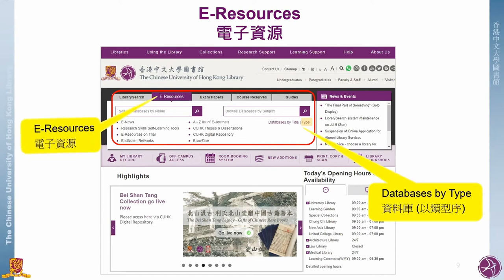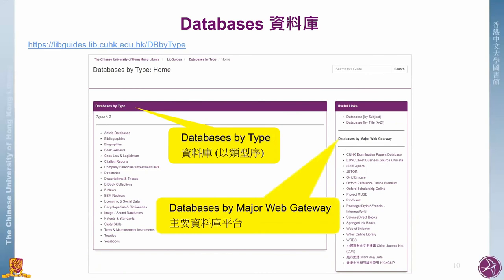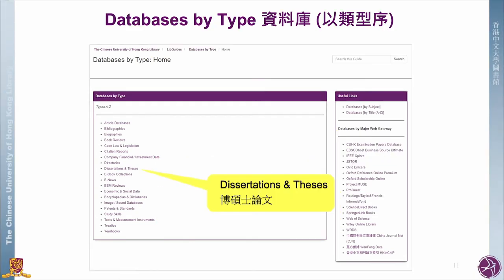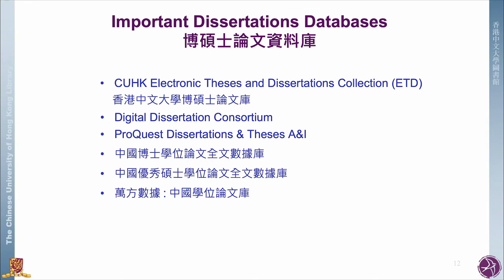Under e-resources, we choose 'Databases by Type.' This leads to a list of databases by type on the left and a list of databases by major web gateway on the right. Among the various types of databases, dissertations and theses will be a particularly useful resource to you. Here are some highlights of the dissertation databases.